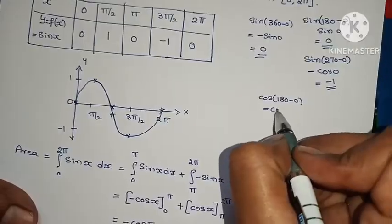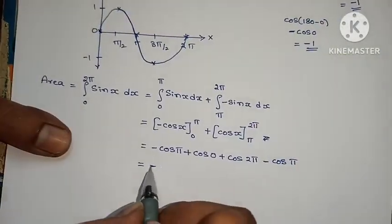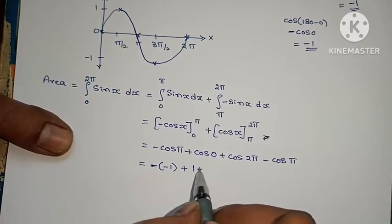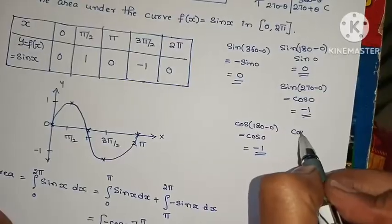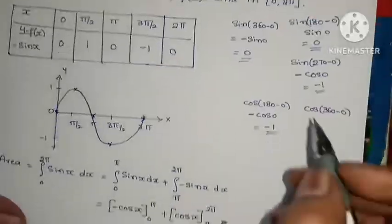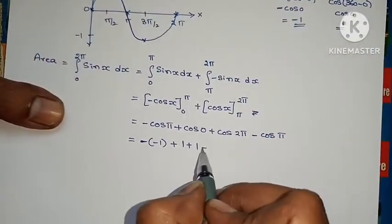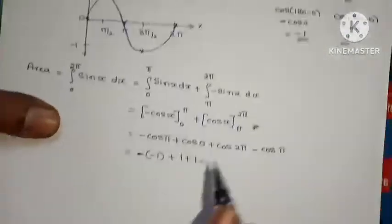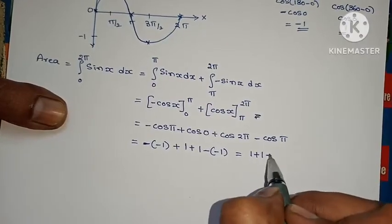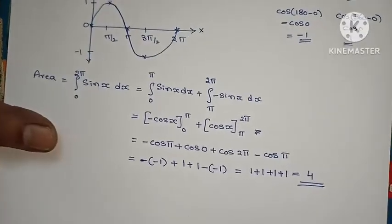Integrating: [−cos x] from 0 to π plus [cos x] from π to 2π. Applying limits: (−cos π + cos 0) + (cos 2π − cos π). cos 180° = −1, so −(−1) + 1 + 1 − (−1) = 1 + 1 + 1 + 1 = 4. So this area is 4 square units and this problem is complete.